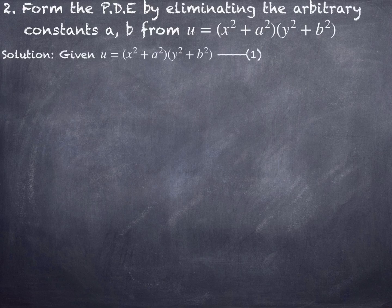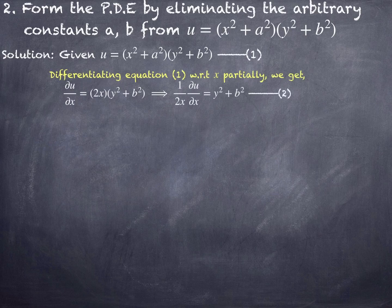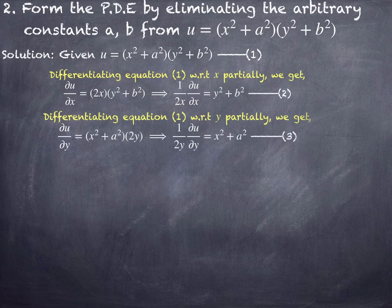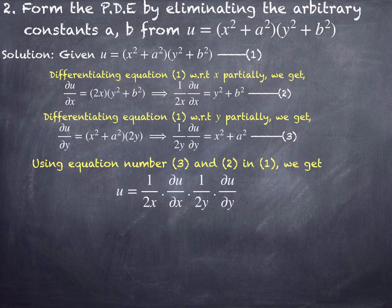Considering the given equation as number 1 and differentiating partially with respect to x, we get ∂u/∂x equals 2x·(y²+b²). Simplify for (y²+b²) to get (1/2x)·(∂u/∂x). Again differentiating equation 1 partially with respect to y gives ∂u/∂y equals (x²+a²)·2y, since x is a constant. Simplify for (x²+a²) to get (1/2y)·(∂u/∂y).